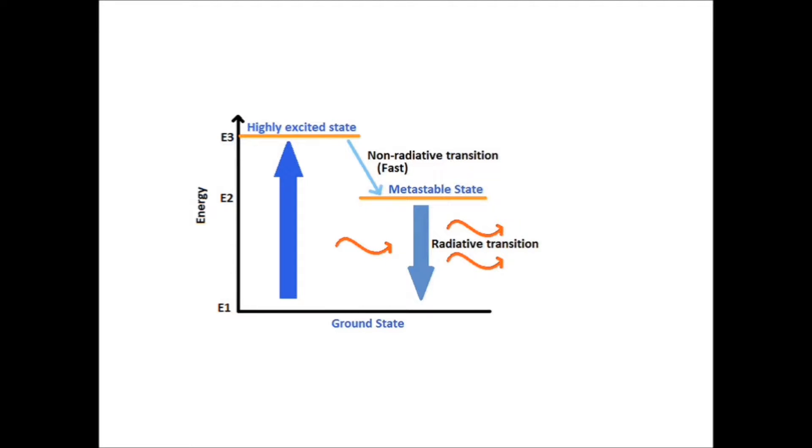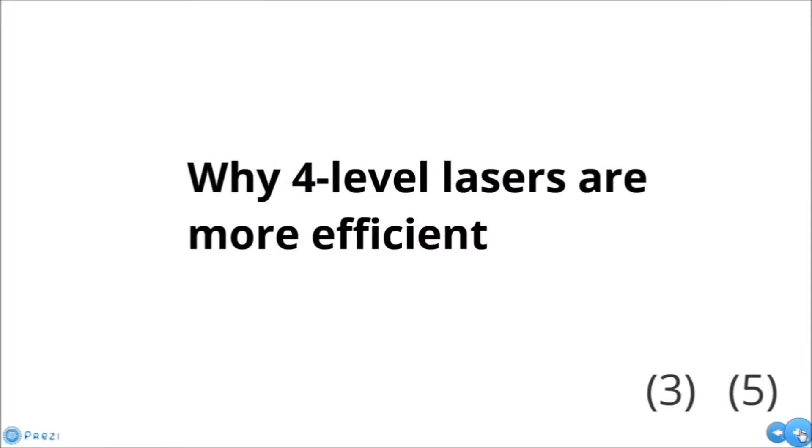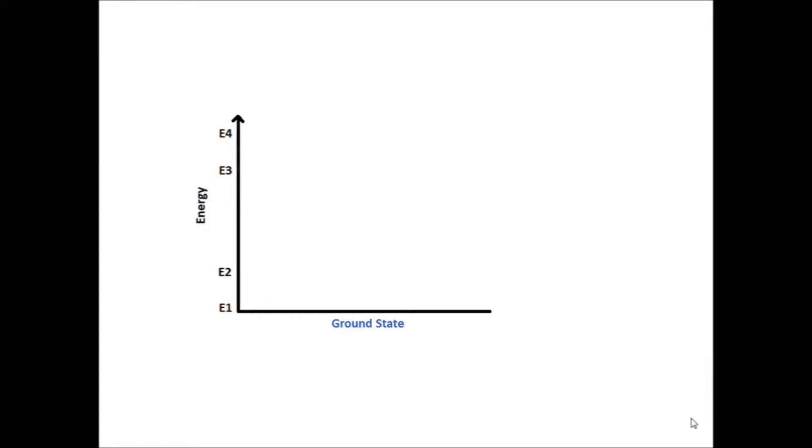When stimulated, a radiative transition occurs and photons are emitted, and light is amplified. But as this transition is slower than the one to the metastable state, the population inversion is maintained.